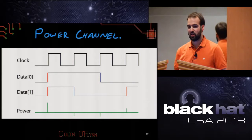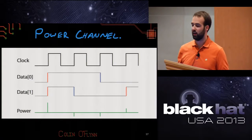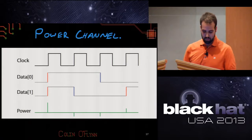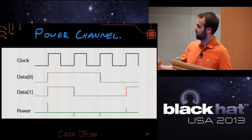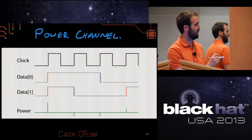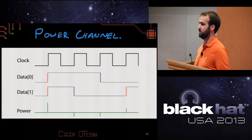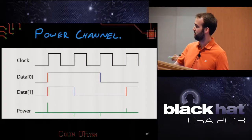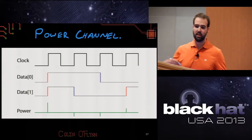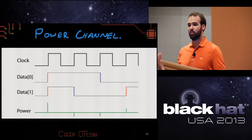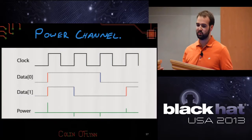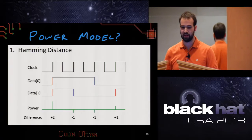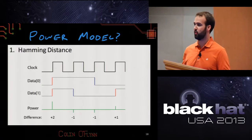Importantly, all of those data lines are switching at the same instance in time — they're switching relative to a clock. When the first clock edge happens, two data lines switch, and there's a big positive spike because two data lines are switching. At the next positive clock edge, only one data line is switching, going from positive to negative, so we see a negative spike. So on each clock edge we're learning how many data lines changed. We call this the Hamming distance — we're learning the Hamming distance of data that was on the bus before and is on the bus now.